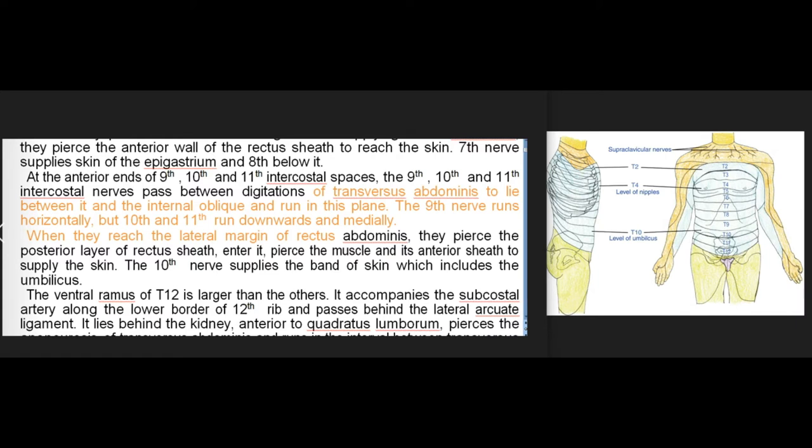The 7th nerve supplies the skin of the epigastrium and the 8th below it. At the anterior ends of the 9th, 10th and 11th intercostal spaces, the 9th, 10th and 11th intercostal nerves pass between digitations of transversus abdominis to lie between it and the internal oblique and run in this plane. The 9th nerve runs horizontally, but the 10th and 11th run downwards and medially.